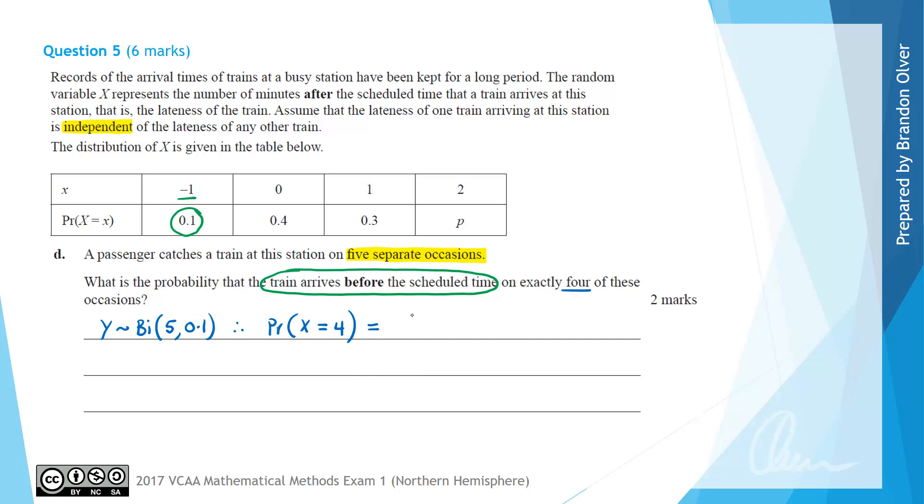is equal to 5 choose 4 times the probability of success, which is 0.1, which I'm going to write as a fraction 1 over 10 to the power of 4, times the probability of failure, which is going to be 9 over 10 to the power of 1 occasion being like that.